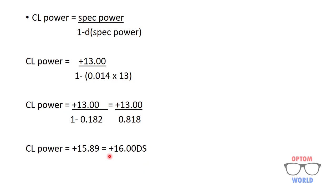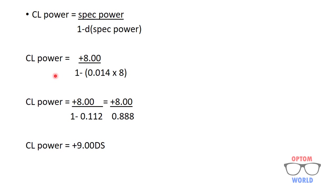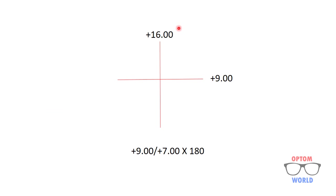Now we calculate the contact lens power for the horizontal meridian, where spectacle power is plus 8. Multiplying BVD by spectacle power gives 0.112, and 1 minus 0.112 equals 0.888. Dividing 8 by 0.888 gives plus 9 diopters. So the optical cross for the contact lens power is plus 16 at the vertical meridian and plus 9 at the horizontal meridian.